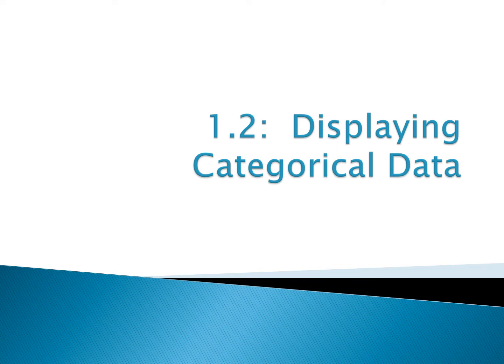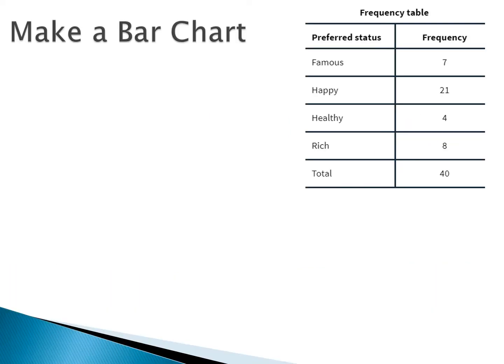Section 1.2: Displaying categorical data. In this section, we're going to talk about the different types of graphs that we can use to represent a categorical variable. The one we're going to use most often — because it's the best option for displaying categorical data — is a bar chart.